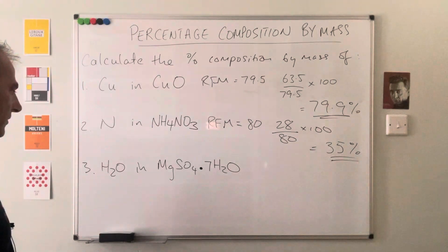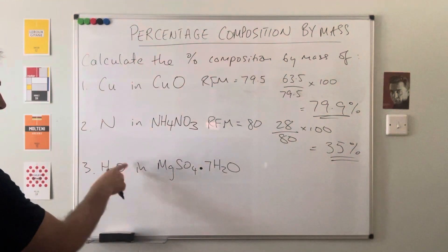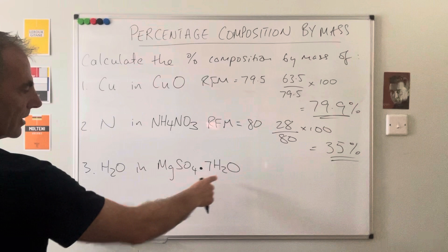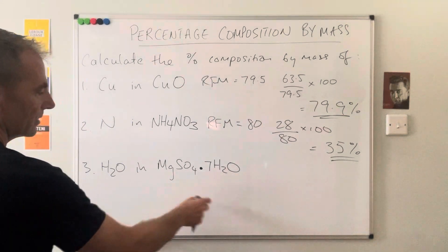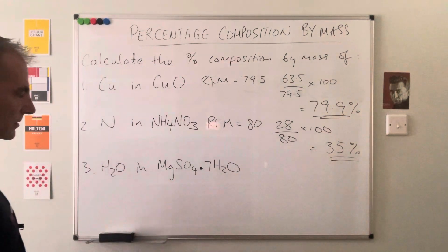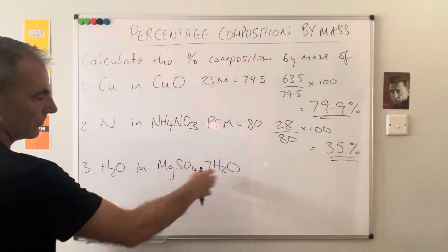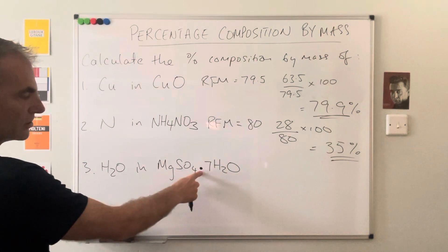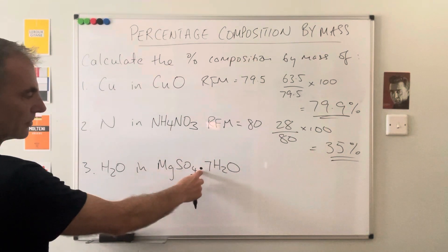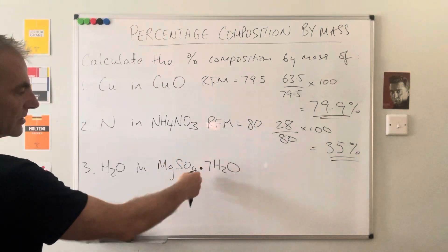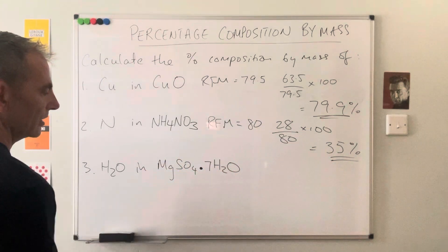So the last one, what's the percentage composition by mass of H2O in this compound? This is called hydrated magnesium sulphate. So we represent these hydrated salts by what's called a dot formula, so that dot there. And basically it separates the two parts of the salt.